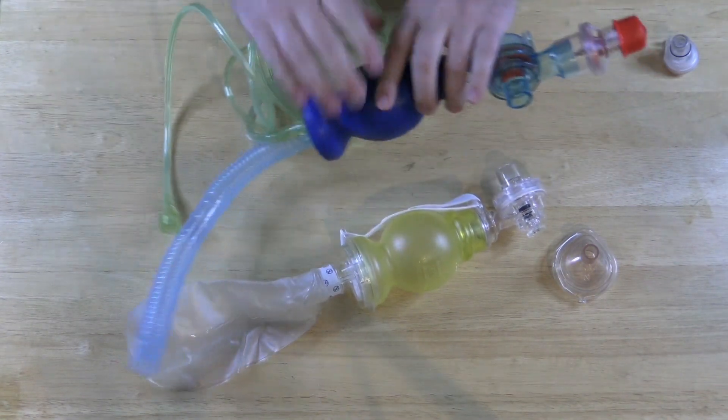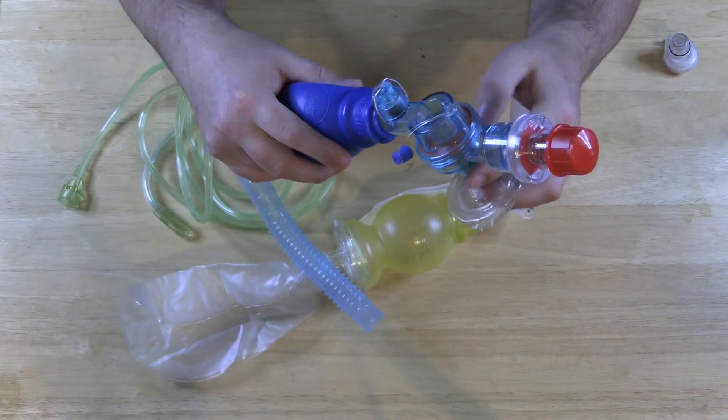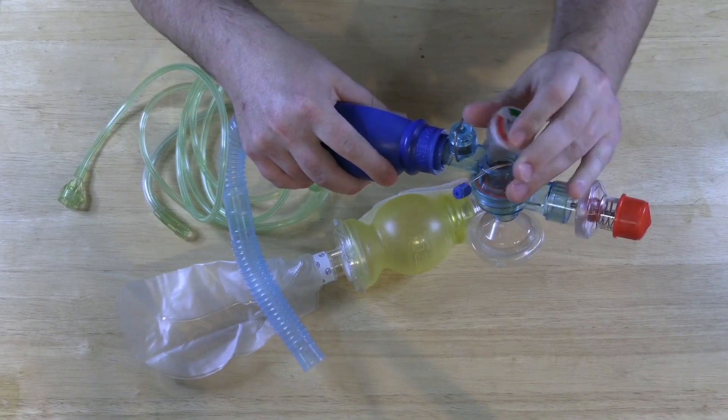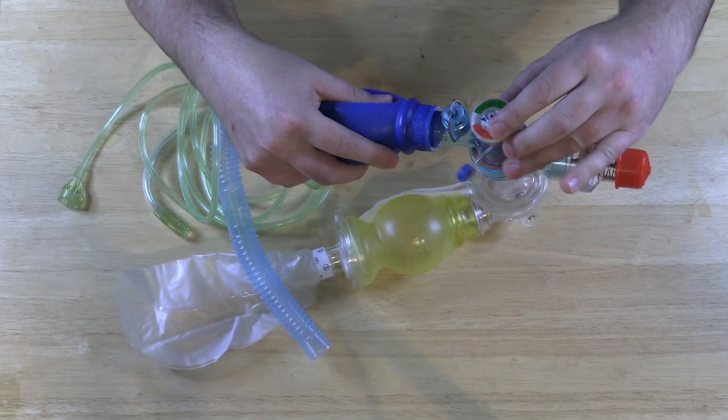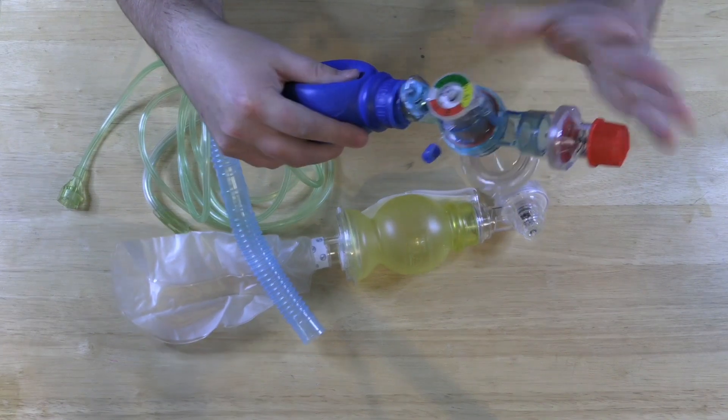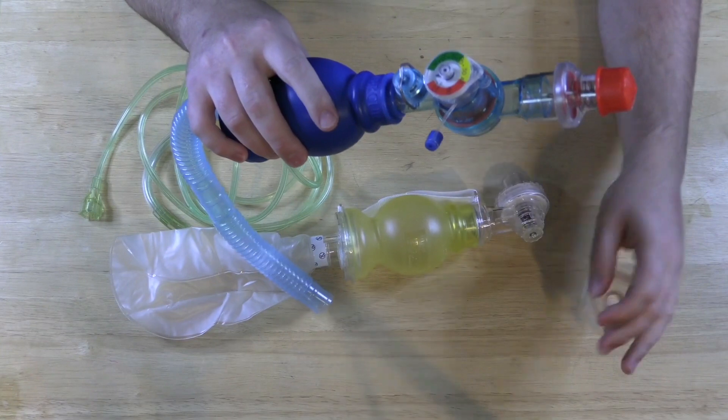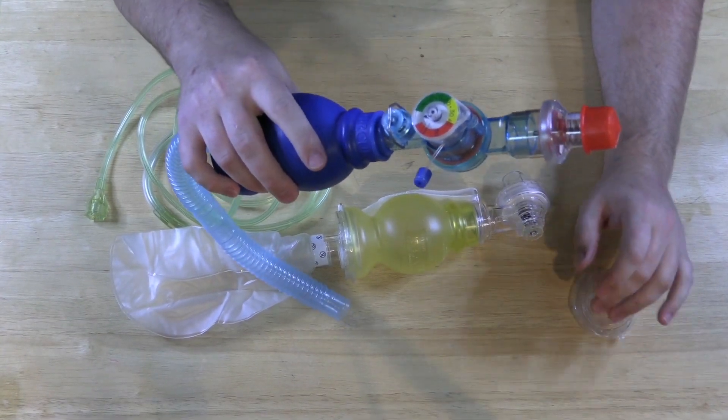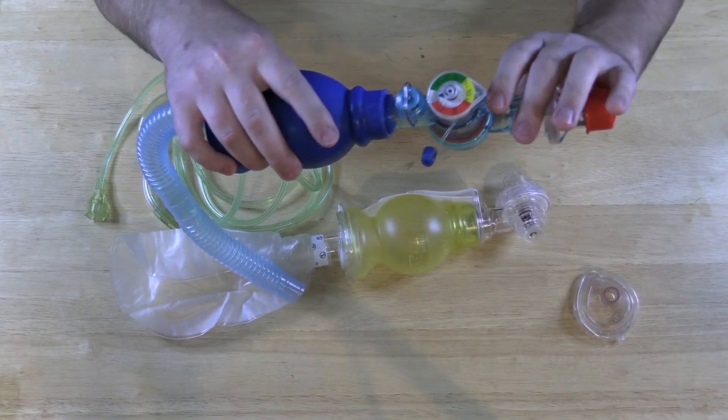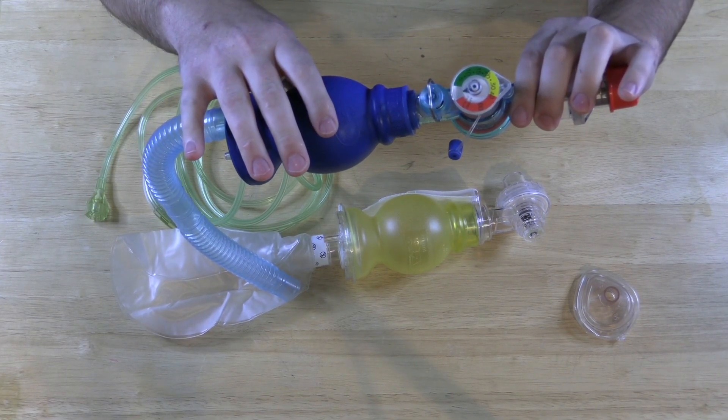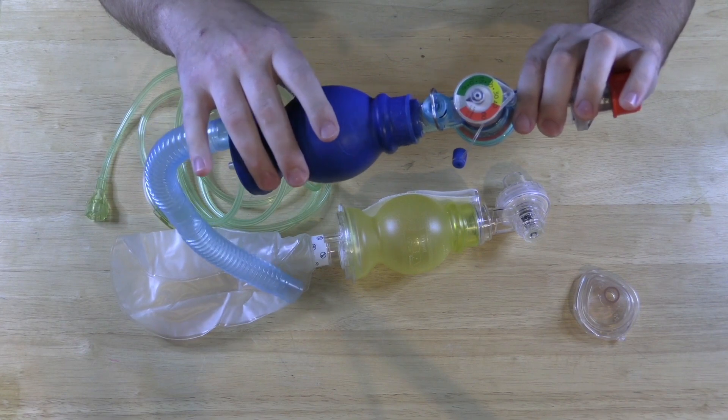Now when you are pre-oxygenating you want to be really careful. My little manometer fell out. You want to be careful not to give too much pressure and that's really where this is going to come in handy. It's been said that the esophageal sphincter especially in kids doesn't have a lot of tone and it can pop open when you start getting up near 20-25 centimeters of water pressure.